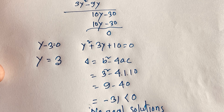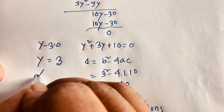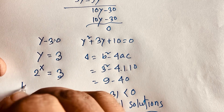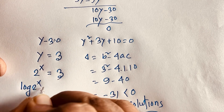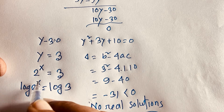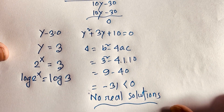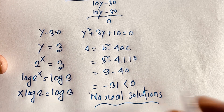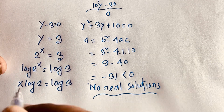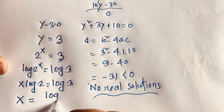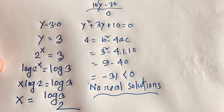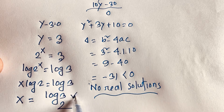Since y = 3 and y = 2^x, we have 2^x = 3. Taking the natural log of both sides: x·log 2 = log 3. Dividing both sides by log 2 gives us the final answer: x = log 3 base 2.